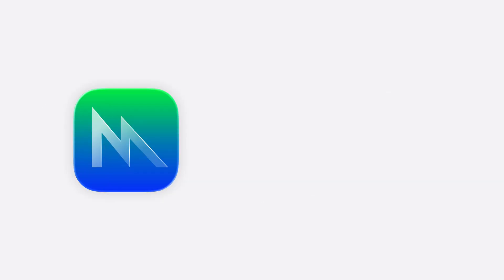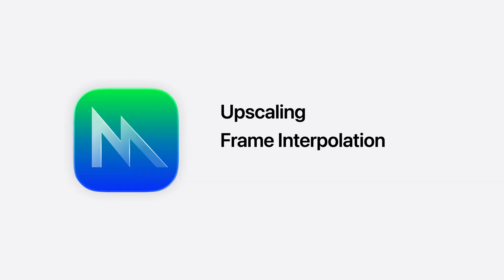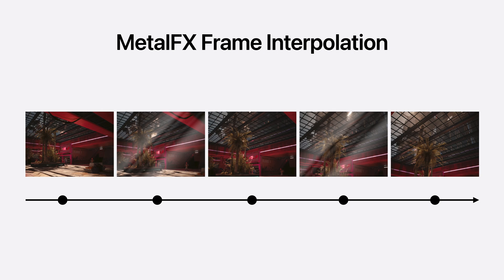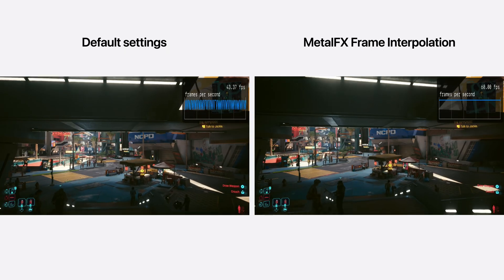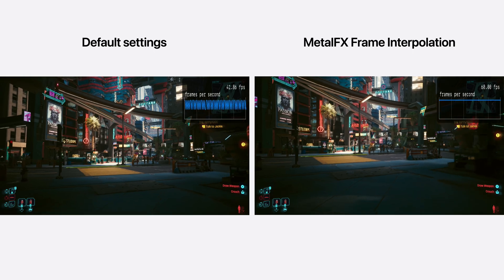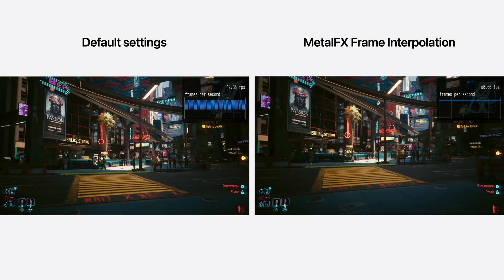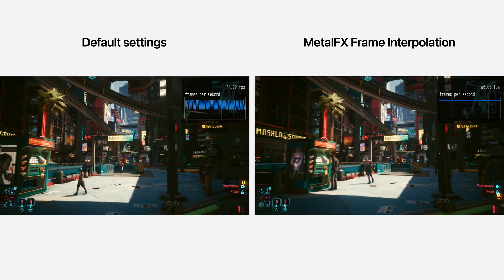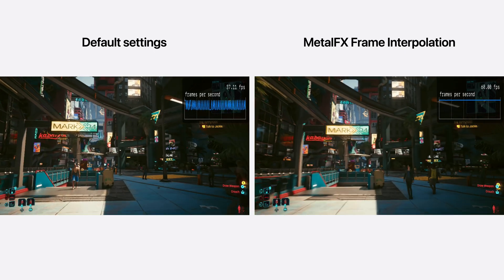And you can use Metal FX upscaling, frame interpolation, and denoising APIs to take your game's graphics performance to the next level. Metal FX frame interpolation generates an intermediate frame for every two input frames to achieve higher and more stable frame rates. Here we're showing the upcoming Mac version of Cyberpunk 2077 on the M4 MacBook Air. On the right, CD Projekt Red is using Metal FX frame interpolation to increase performance to a solid 60 frames per second.